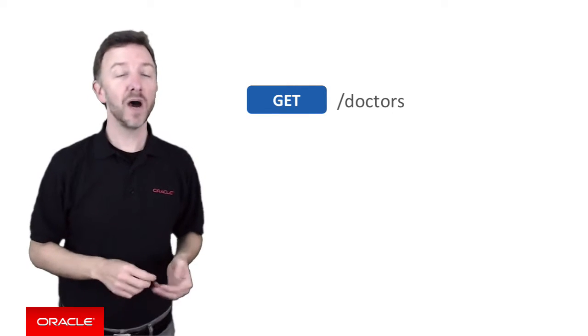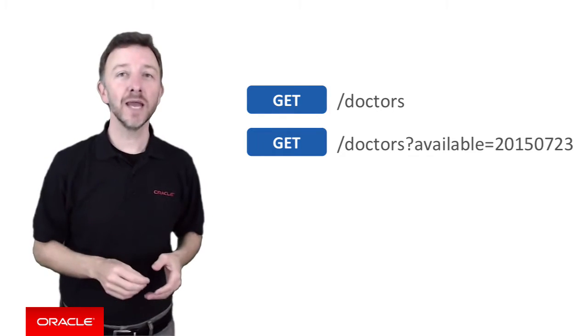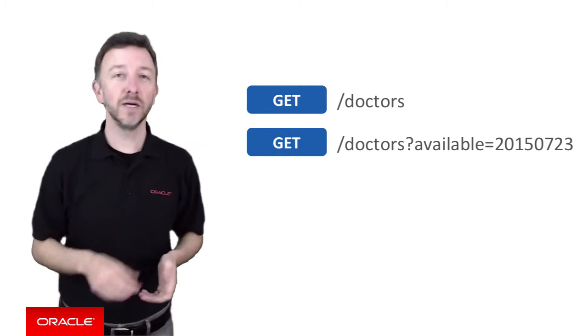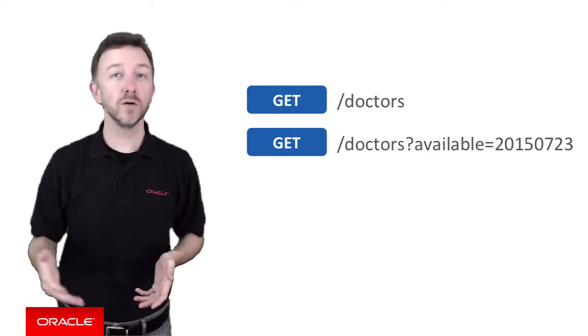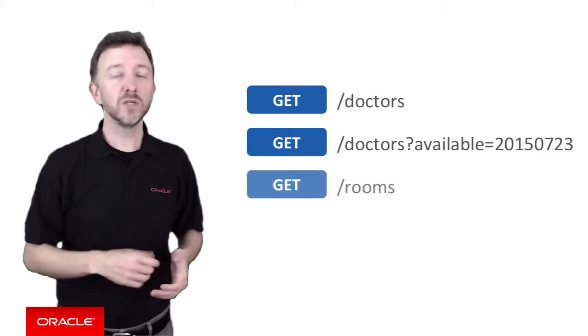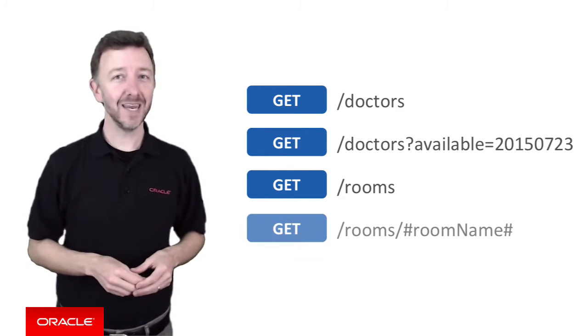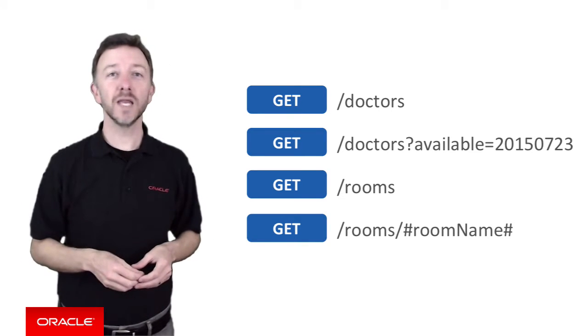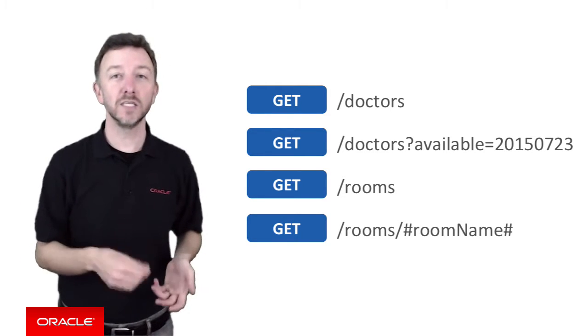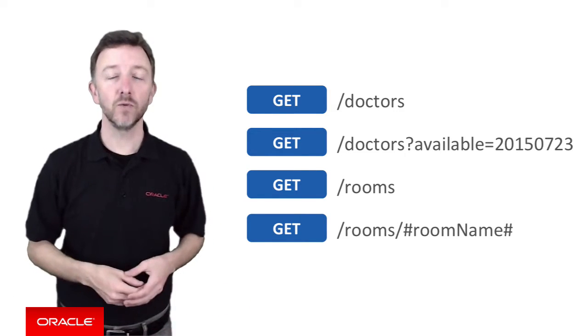In order to support these requirements we'll deliver four REST endpoints. First, a GET returning the list of doctors at the URI path slash doctors. Second, a GET returning the list of doctors rostered on at a given date using a URL query parameter slash doctors question mark available equals and then a date like 20150723. Next, a GET returning a list of surgery rooms via the URI path slash rooms. And finally a nested GET under rooms which accepts the room name as a URI parameter, such as slash rooms slash room name, returning an equipment list and other room details.